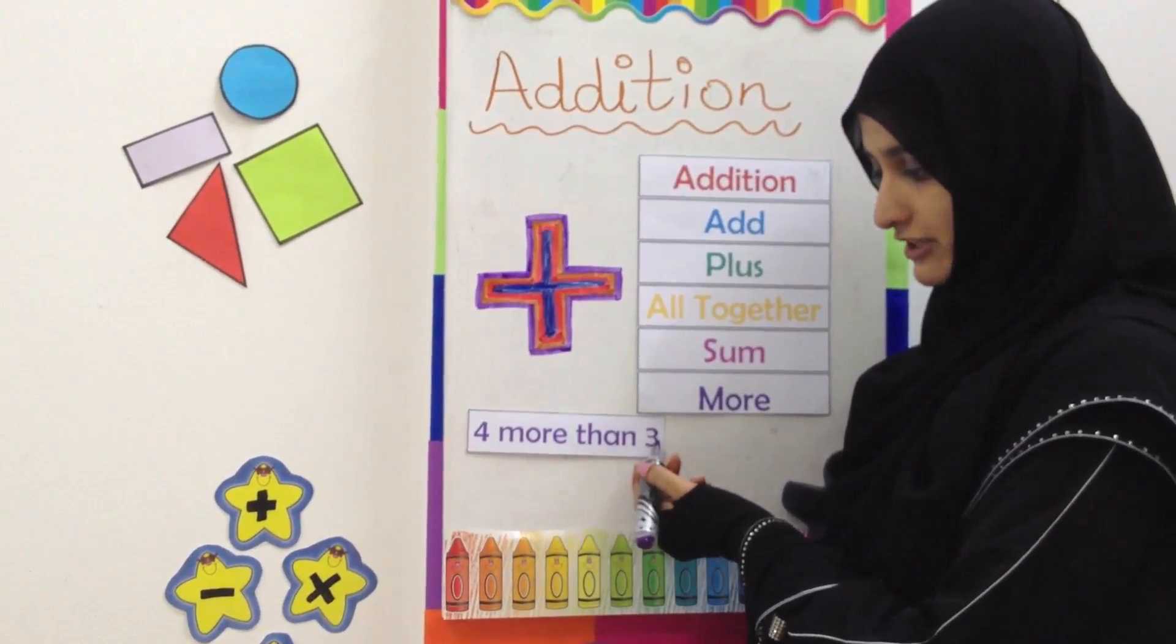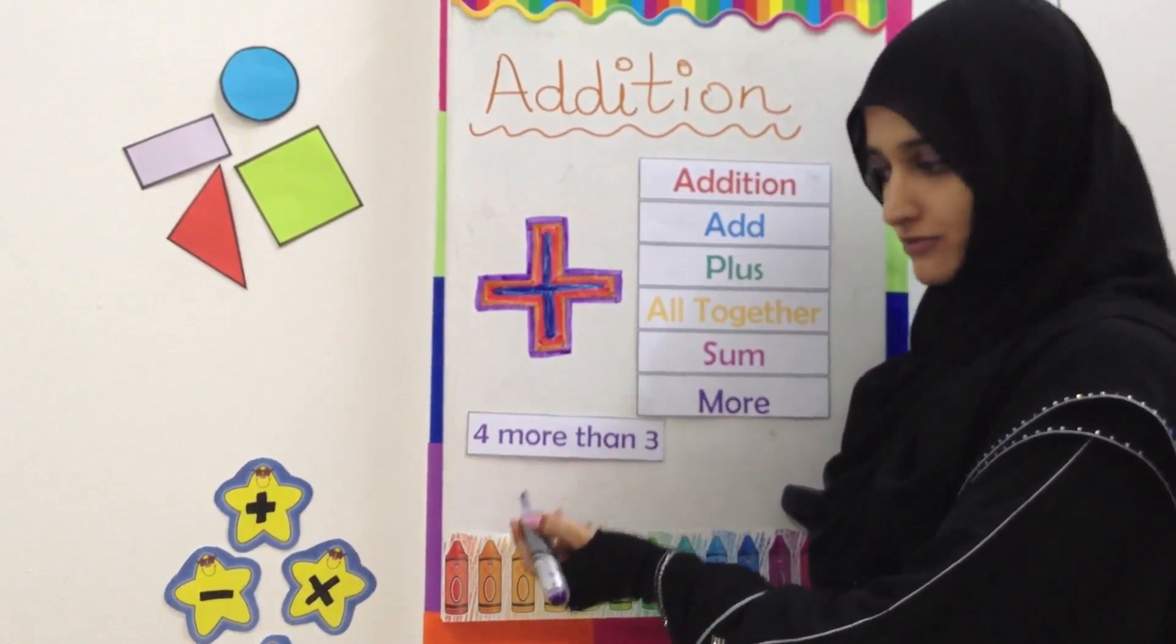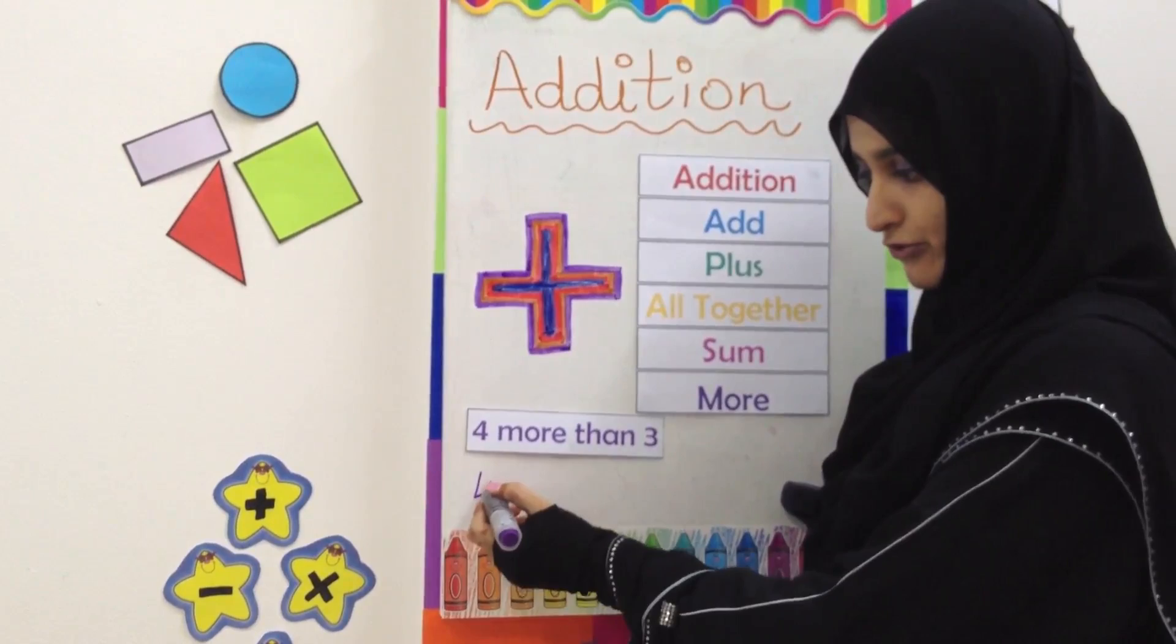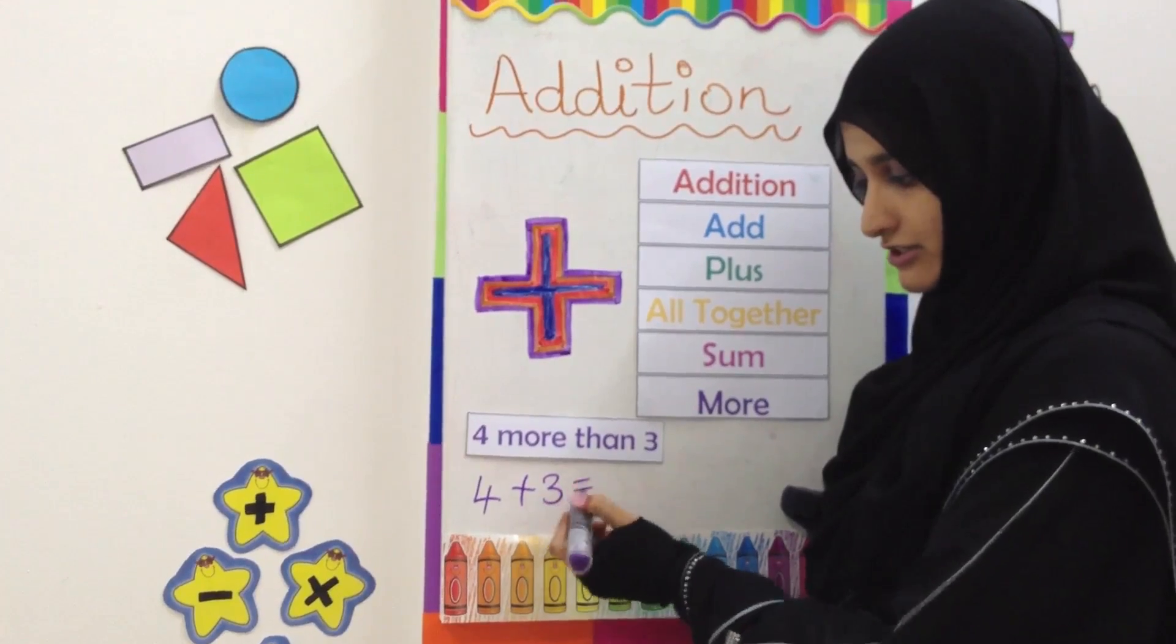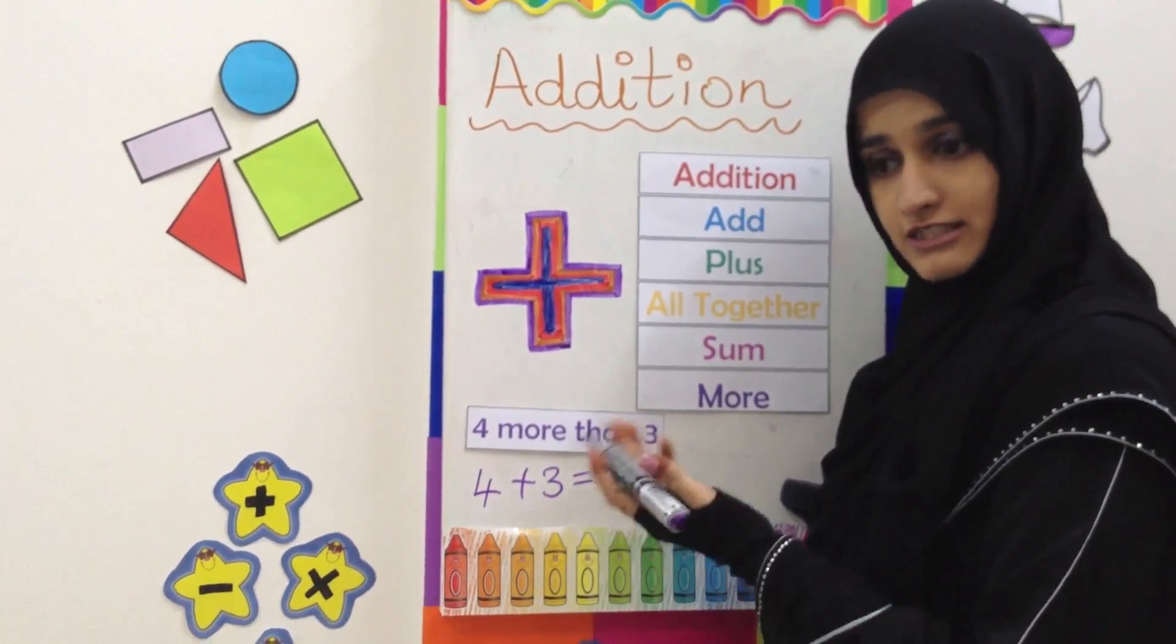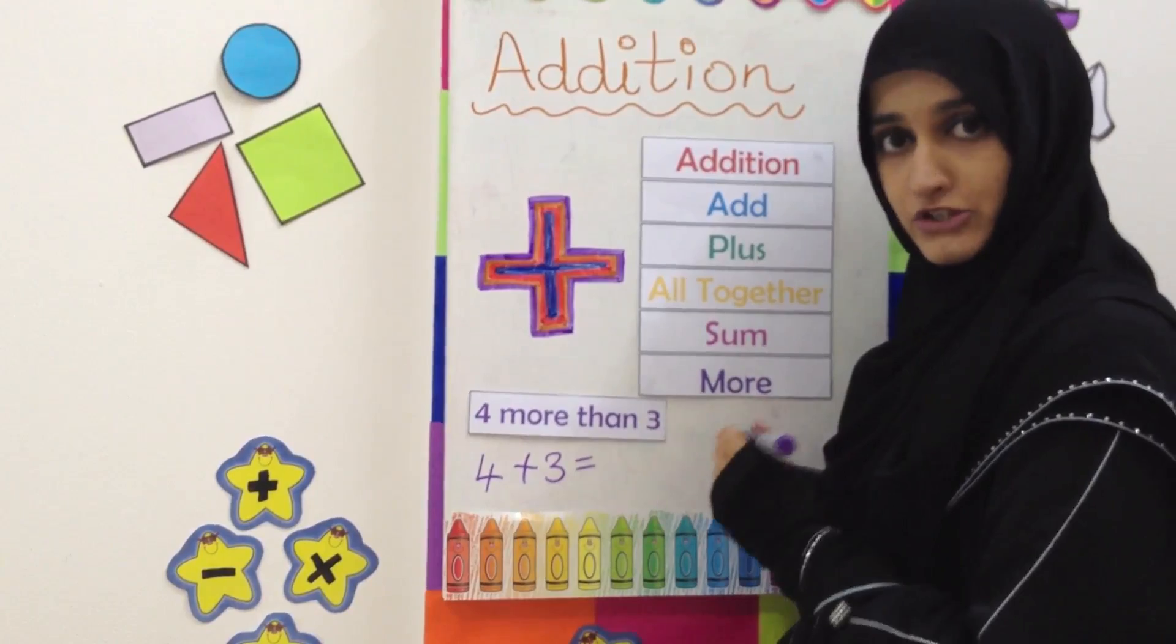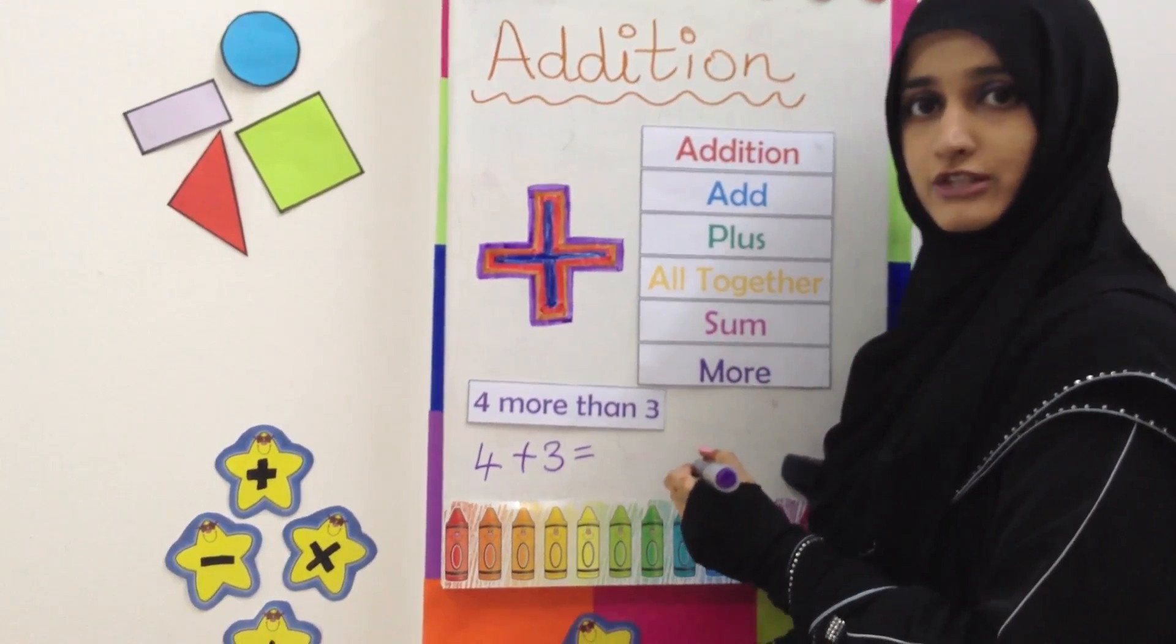Four more than three. We are going to solve this sum. We write it in the number form: four plus three. We have to find out the answer. Sometimes when we see sums, we don't have objects or pictures with them, so we can draw them ourselves.